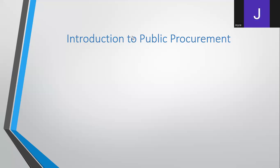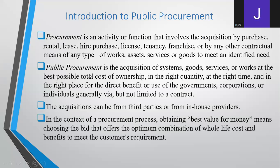Chapter one is introduction to public procurement. Public procurement is a very critical area in all organizations. When you're talking about public procurement, what comes into our mind is the public entities — we are talking about the ministries, departments of government, and agencies of government. For example, we can talk about the Ministry of Health and the Ministry of Transport.